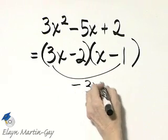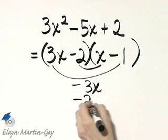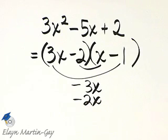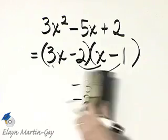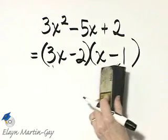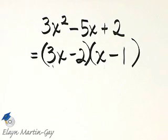That's negative 3x and that's minus 2x. And if I find that sum, that is negative 5x. So I have factored correctly. And the factorization is 3x minus 2 times x minus 1.